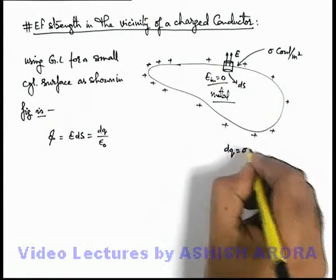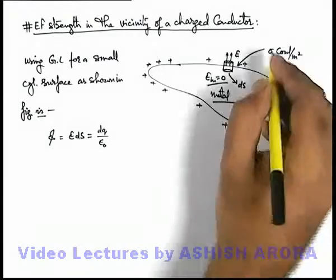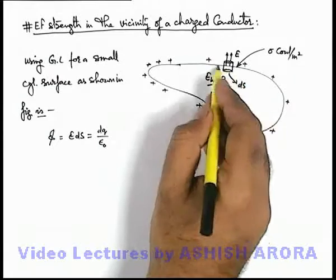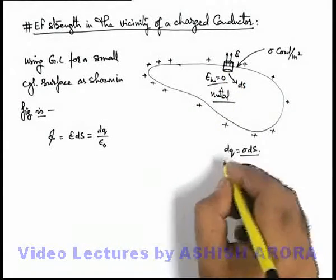And here d-q can be written as sigma d-s because sigma we are treating as surface charge density at the location of this elemental area d-s which is the enclosed charge.